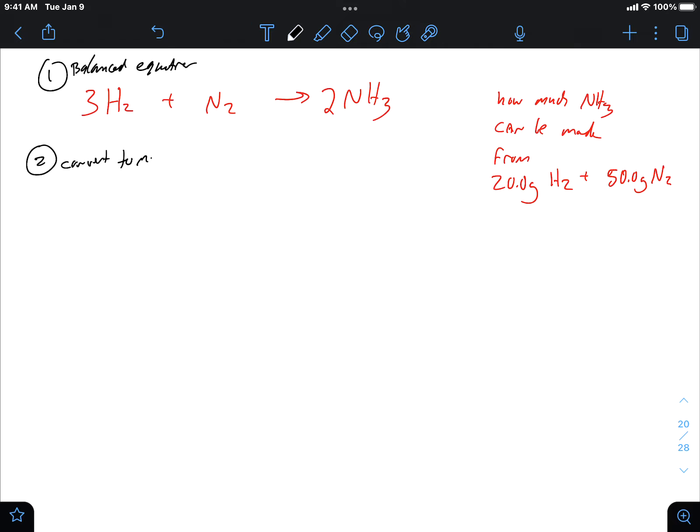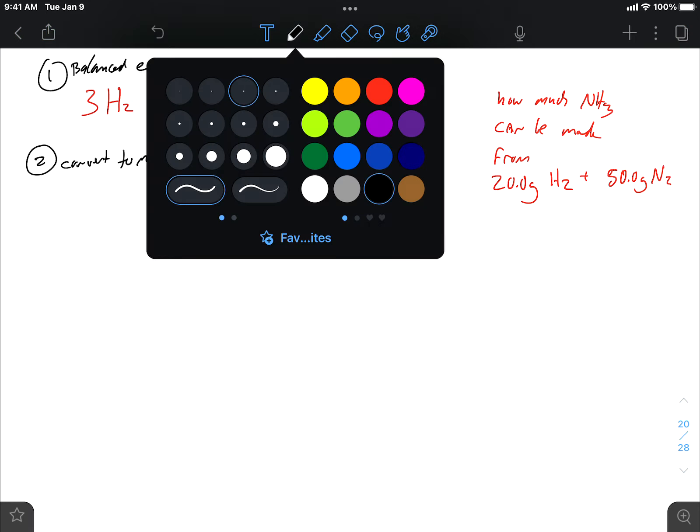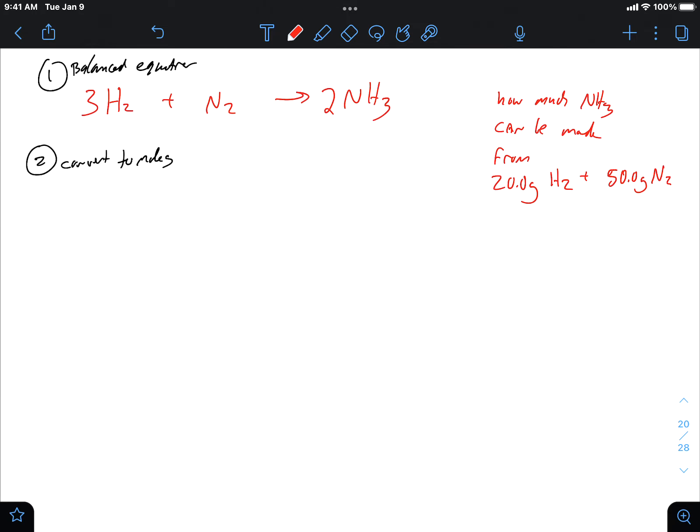Step two: convert to moles. All right, so 20 grams of hydrogen. Hydrogen is diatomic, so when I look up its molar mass, a mole of H2 is going to be twice the hydrogen mass, so 2.02.